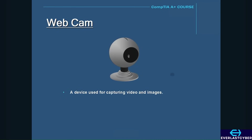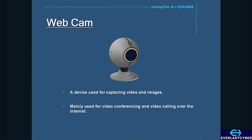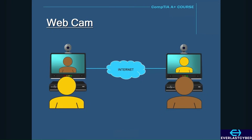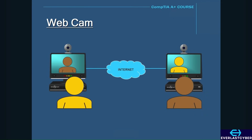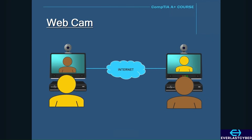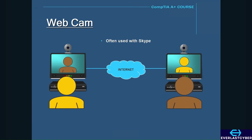A webcam is a device used for capturing video and images. Webcams are mainly used for video conferencing and video calling over the Internet, so any two people in the world can visually communicate if they both have a webcam and an Internet connection. Most webcams have a built-in microphone to capture audio. Webcams are often used with messaging applications such as Skype, and two of the biggest manufacturers are Microsoft and Logitech.